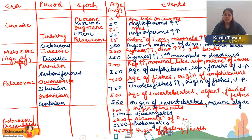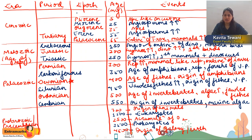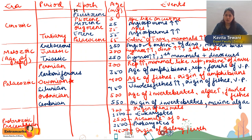The last two epochs are Pleistocene and Holocene. Pleistocene is approximately 1.8 million years ago, and Holocene is approximately 0.01 million years ago. These are very important.